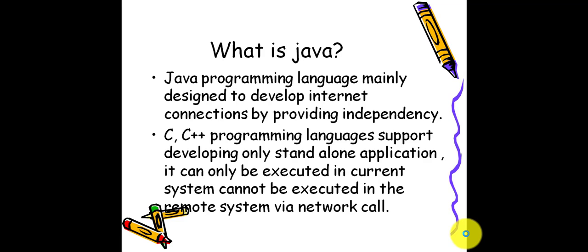Coming to the basics — what is Java? Java is one of the programming languages and it was mainly designed to develop internet connections. Nowadays everything runs on the internet, so it was mainly designed for internet connections, and that's why Java got this much popularity in our society. It is also an independent language and it doesn't have many dependencies.